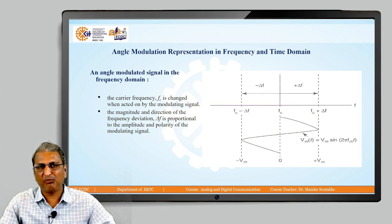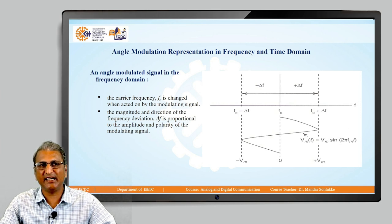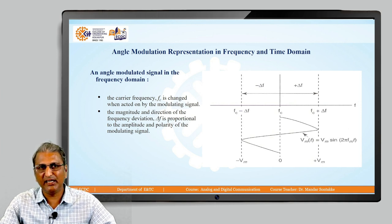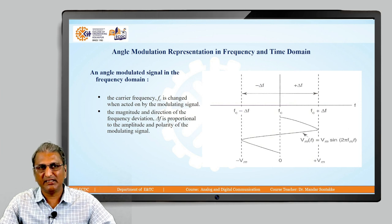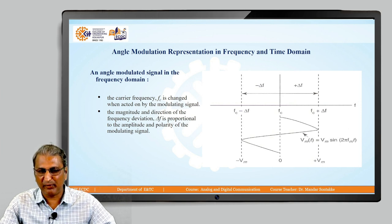On the positive half cycle the deviation is +Δf, and on the negative side it is −Δf, so the total carrier swing is 2·Δf. This is the angle modulation representation in the frequency and time domain.